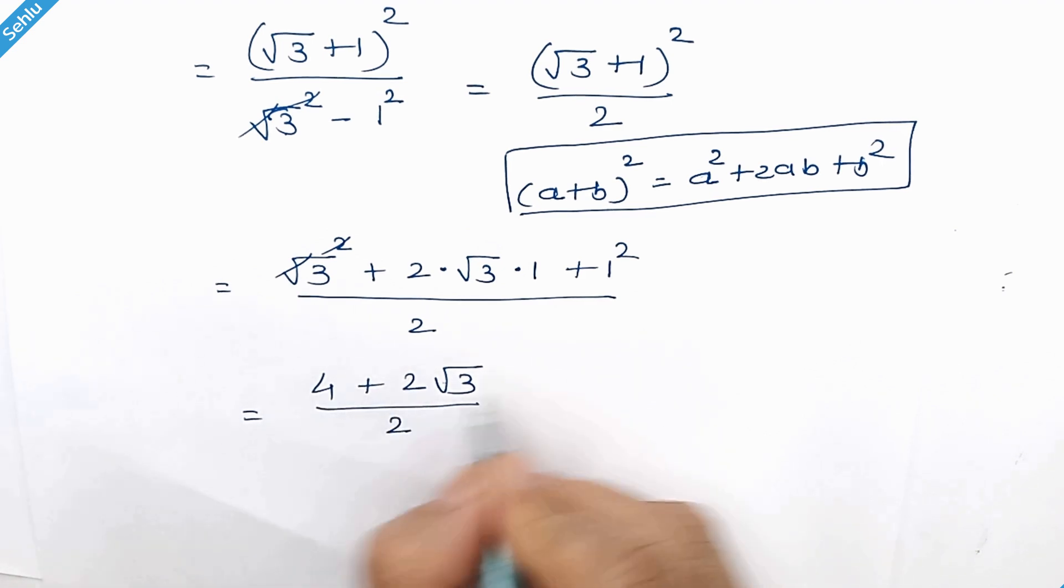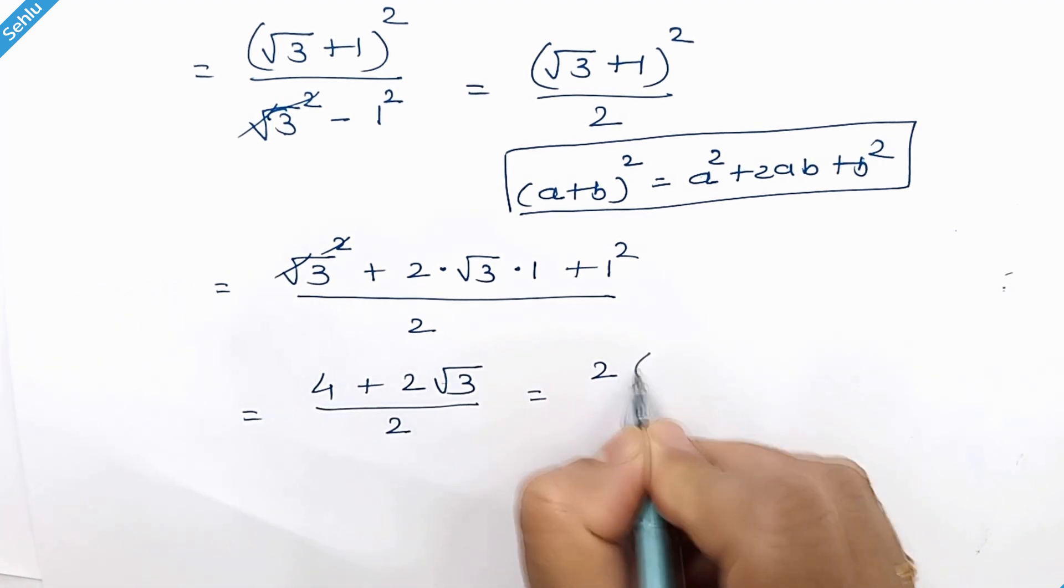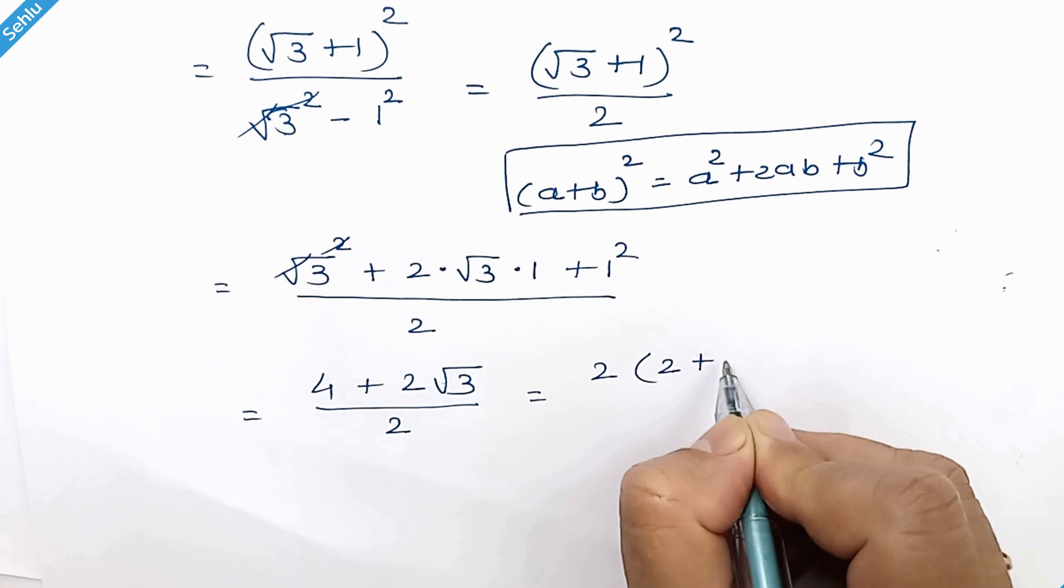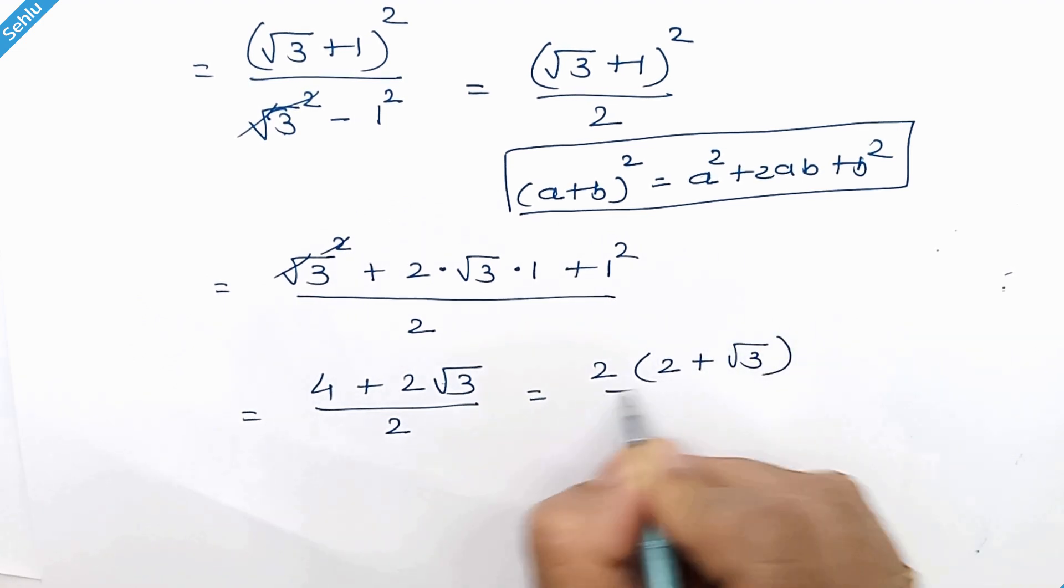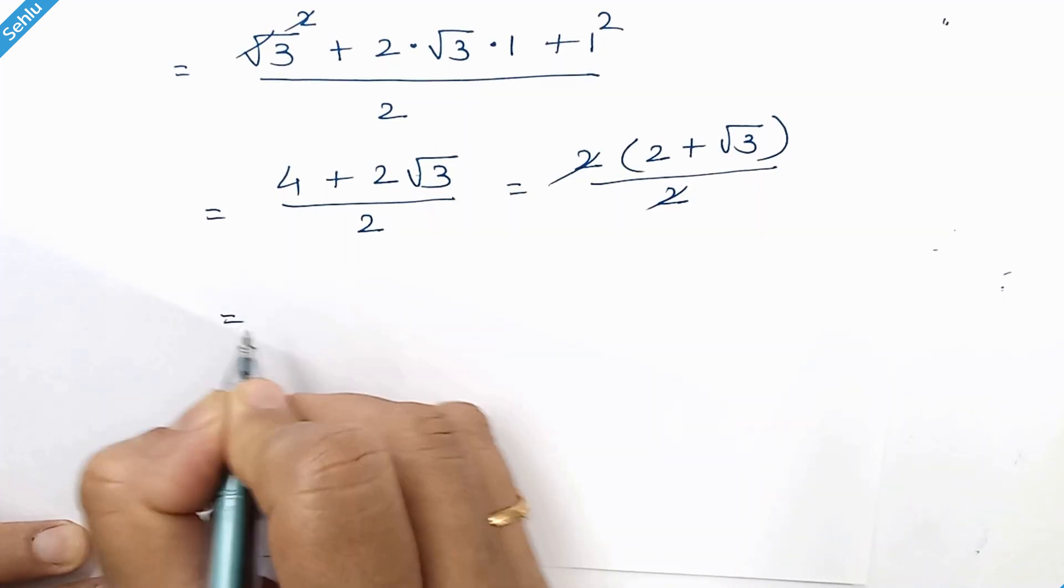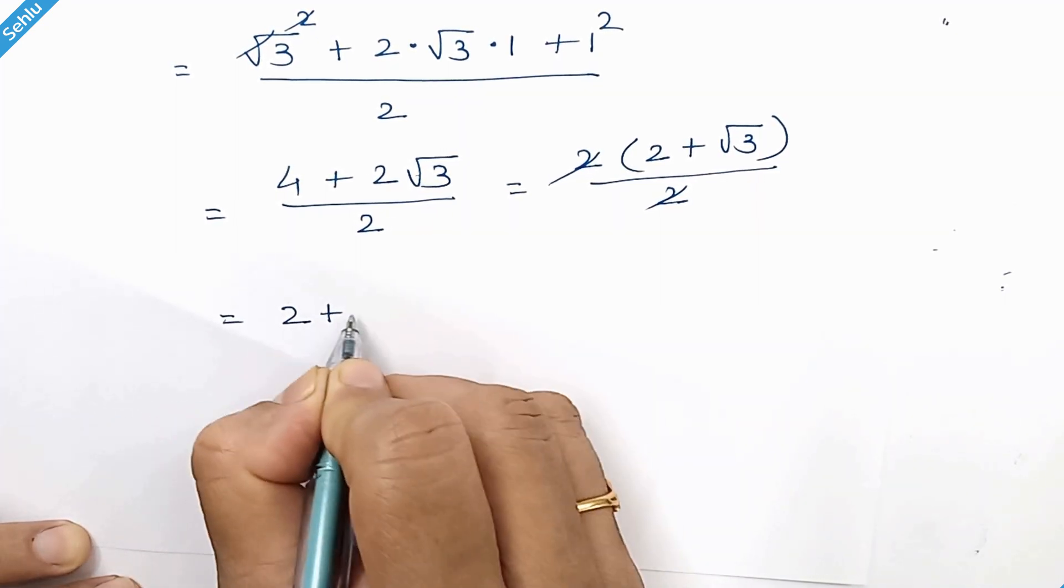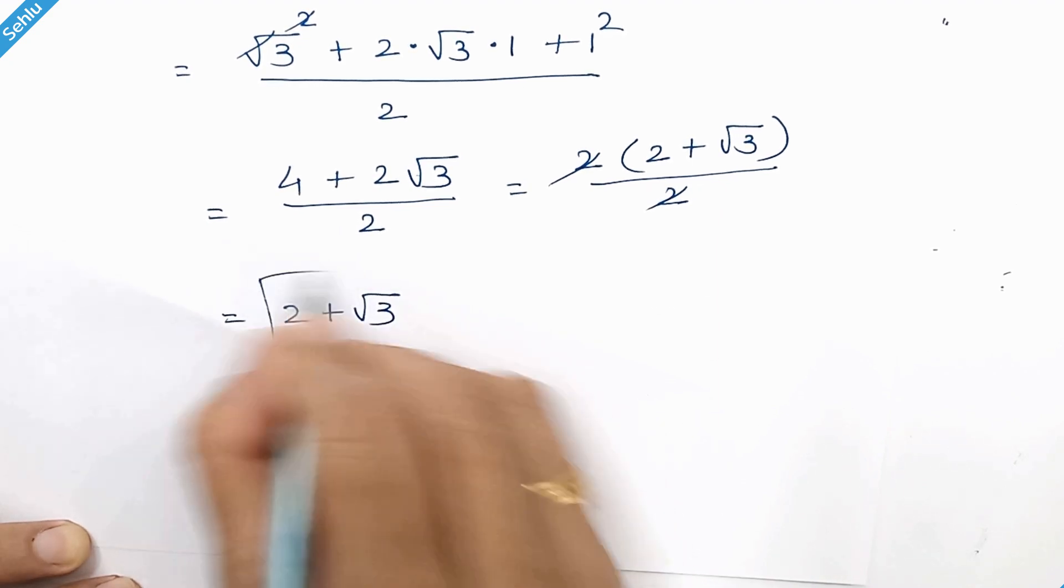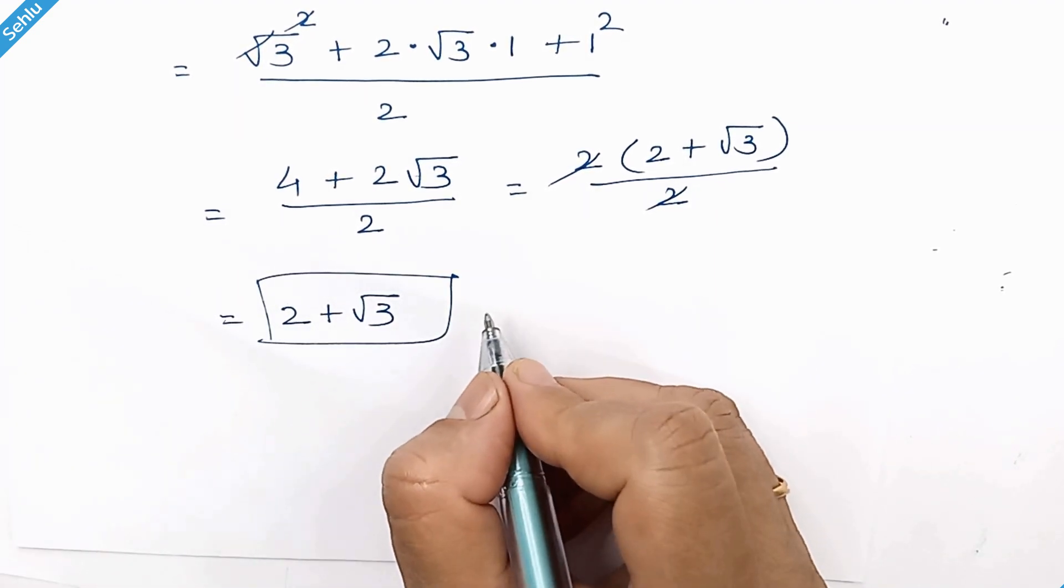Taking 2 common, this 2 gets cancelled out. Now we have 2 plus square root 3, this is our answer.